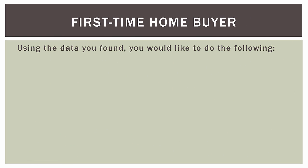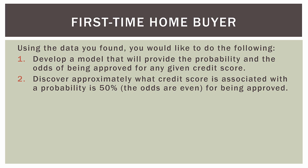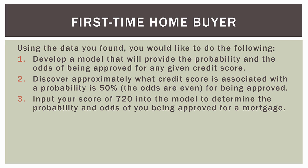Using the data you found, you would like to do the following. Number one, develop a model that will provide the probability and the odds of being approved for any given credit score. Number two, discover approximately what credit score is associated with a probability of 50% — so the odds are even — for being approved. If you walk into the bank with that credit score, it's basically like flipping a coin: your probability is 50% of being approved. Number three, input your score of 720 into the model to determine the probability and the odds of you being approved for a mortgage.